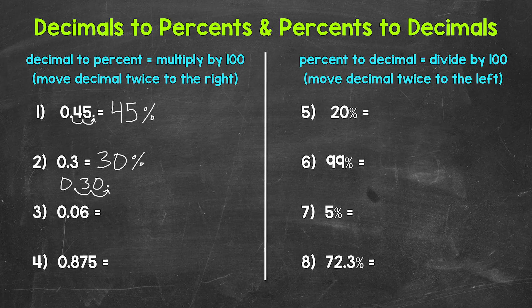Moving on to number three, we have 0.06 — six hundredths. Let's multiply by 100 by moving the decimal twice to the right, so the decimal comes after the six. Six hundredths equals 6%.